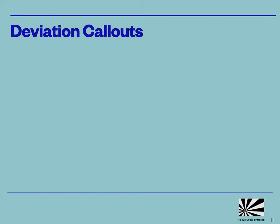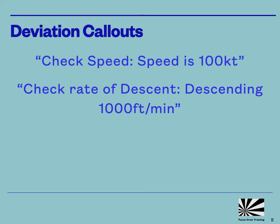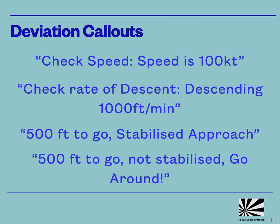Before reaching the point at which the approach must be stabilised, on a multi-pilot operation, the pilot monitoring can assist with achieving the correct parameters. He does this by using a set of standardised deviation call-outs to alert the pilot flying when there is an adjustment to be made. The exact format of the call-outs will be decided by the operator, but they may be something like: 'Check speed. Speed is 100 knots.' 'Check rate of descent. Descending 1000 feet per minute.' On reaching the appropriate position, the pilot monitoring will call out either '500 feet to go, stabilised approach,' or '500 feet to go, not stabilised, go around.' One of the key aims is to avoid the unfortunately very common situation where pilots press on with an uncomfortable approach instead of starting again. It's important to get away from the perception that going around from an approach is a sign of incompetence, whereas in fact it could be seen as a sign of good pilot judgement.